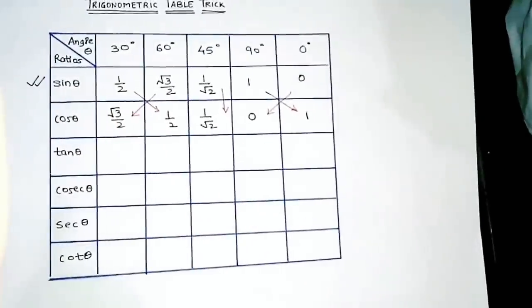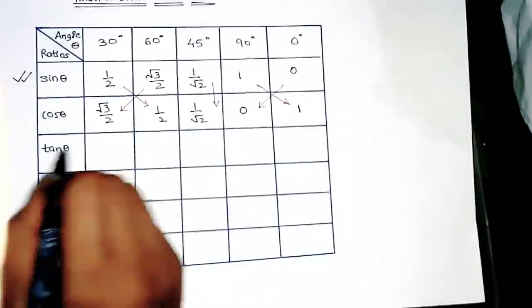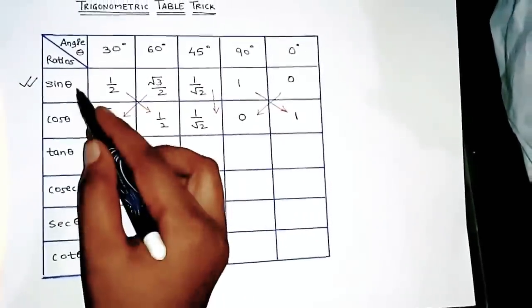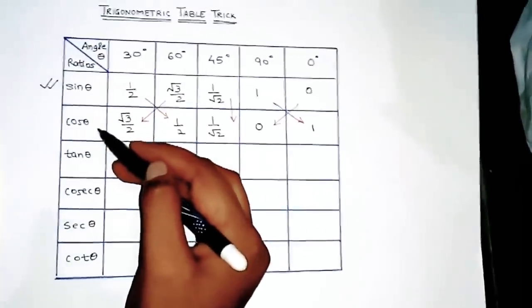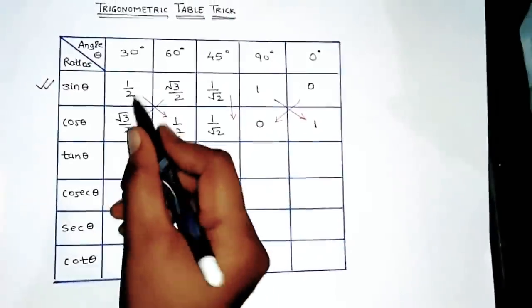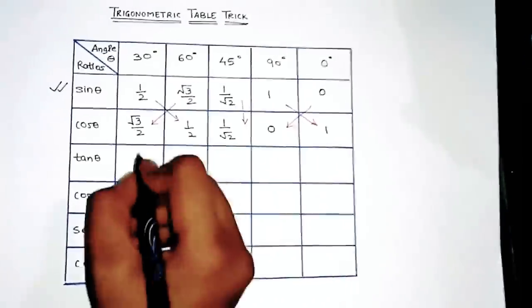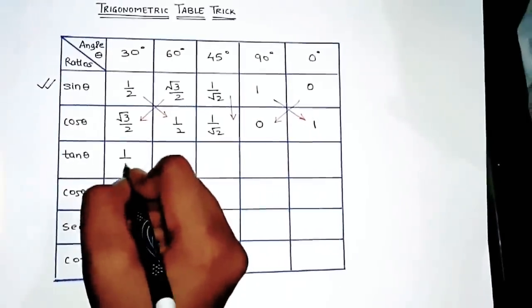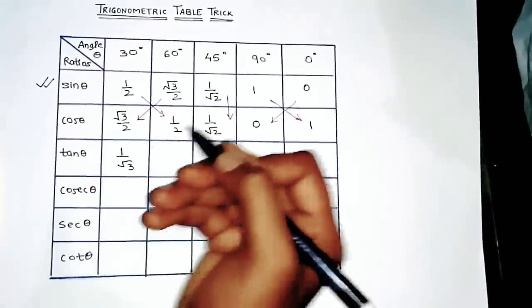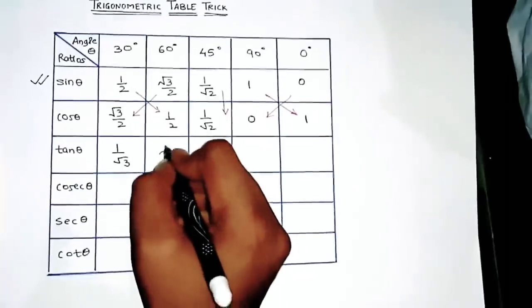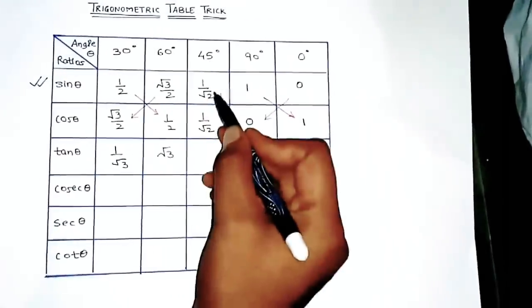Same way we'll do for this also, for cosec and sec. And for tan, it is always opposite. As we know, as we all know that tan θ equals sine θ upon cos θ. Okay, so this upon this, denominator gets cancelled, and you get these values. Tan of 30 is 1/√3, tan of 60 is √3.